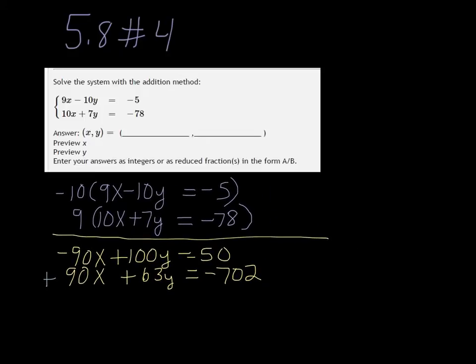Now what you're going to do is add those two rows together. So 50 plus negative 702 is negative 652. 100 plus 63 would be 163Y, and negative 90 plus 90 is 0. So this is gone now.